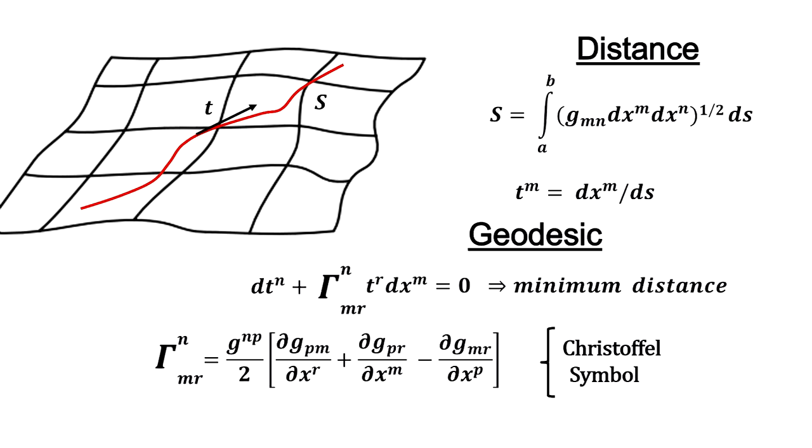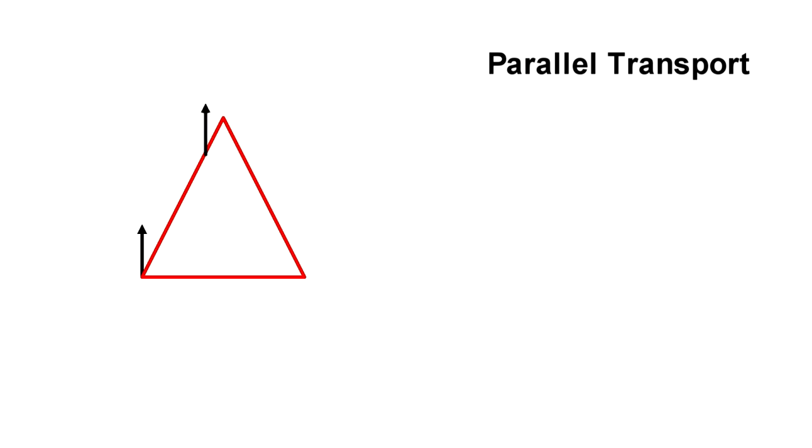Now that we have a way to measure distance and find geodesics, we can determine a space's curvature. Riemann used a concept called parallel vector transport. Picture moving a vector around a triangle in flat space in such a way that it remains parallel to the starting vector. By the time we get back to the start, we have the exact same vector as we started with.